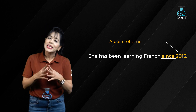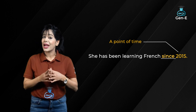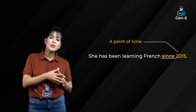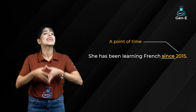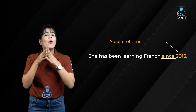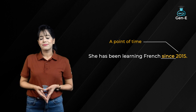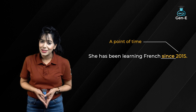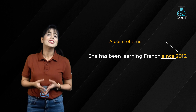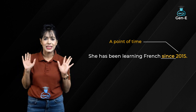Since ko yeh batane ke liye use kiya jata hai ki joh action past mein shuru hua, lekin abhi bhi jal raha hai. Point of time kuch bhi ho sakta hai — koi date, year, day, month, anything.